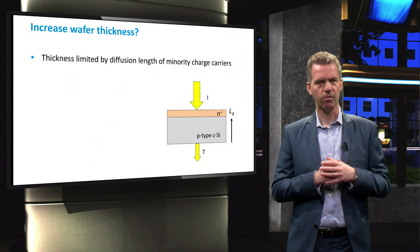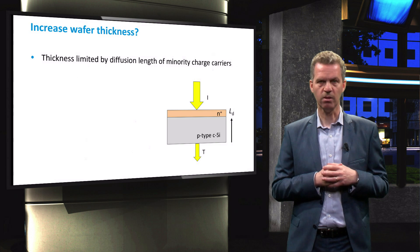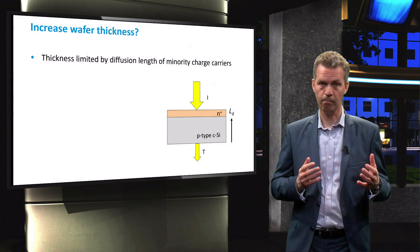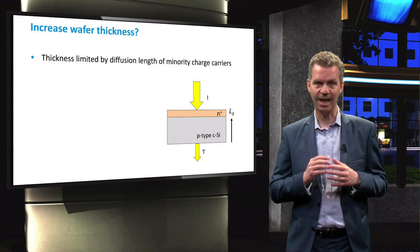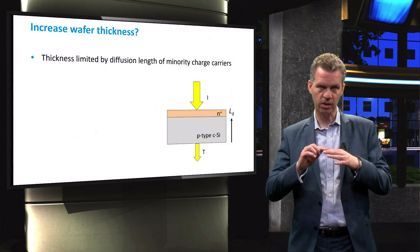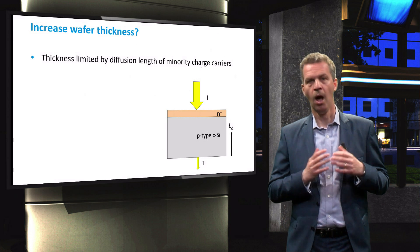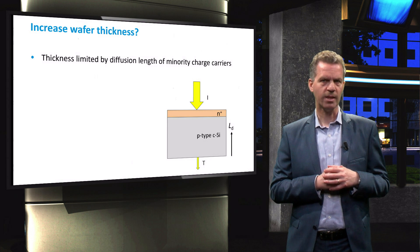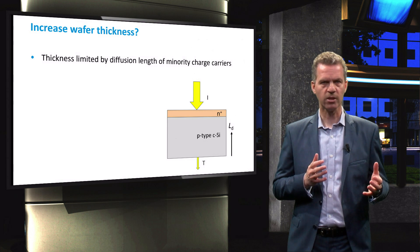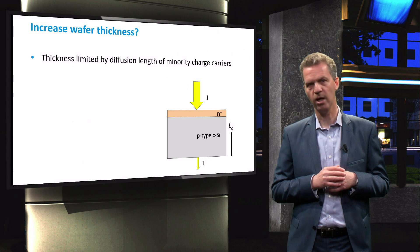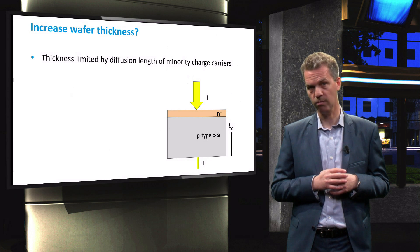However, the maximum thickness of the wafer is limited by the diffusion length of electrons in p-type silicon as these electrons need to travel from the point of generation all the way up to the front surface. It would not make sense to generate electron hole pairs close to the back surface when these electrons will likely not reach the p-n junction at the front.